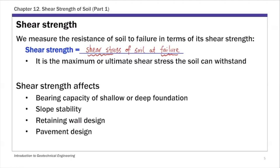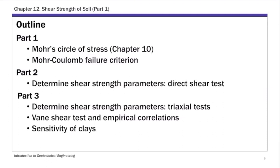Shear strength is a very important concept in geotechnical engineering because it affects many engineering applications — bearing capacity, slope stability, retaining wall design, even pavement design. For this chapter, divided into three parts: part one focuses on the Mohr circle of stress, which helps determine the stress in the soil mass, and the Mohr-Coulomb failure criterion, which tells us when soil fails. Parts two and three deal mostly with shear strength parameters.